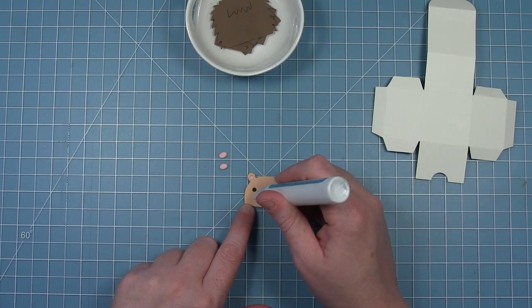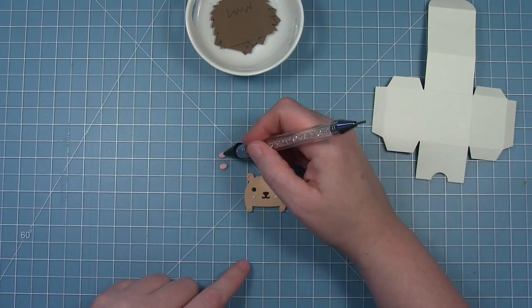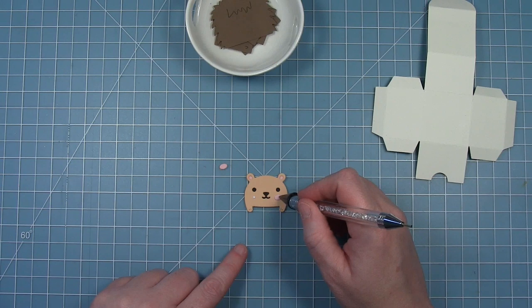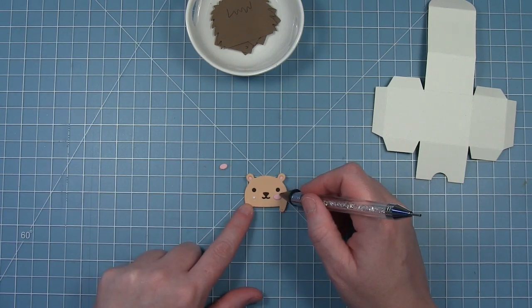I've also cut the little cheeks from some ballet slipper cardstock and I'm just adding a few dots of glue to add those little pink cheeks to the front.